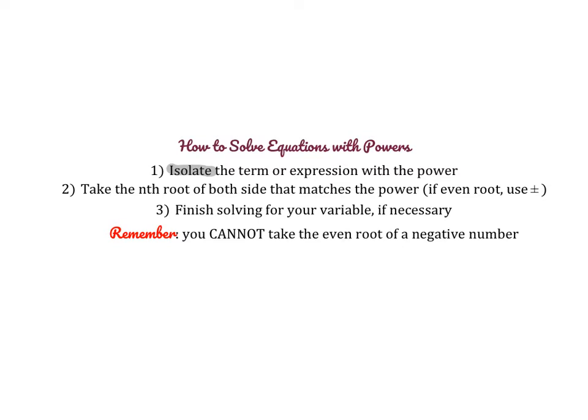Then, you're going to take the nth root of both sides that matches the power. So if it's a cube, you're going to take the cube root of both sides. If you are using an even root, it's really important that you use a plus or minus with it. So, for example, if you're taking the square root or the fourth root of both sides, it needs to be the plus or minus fourth root. And then sometimes you may need to finish solving for your variable if necessary.